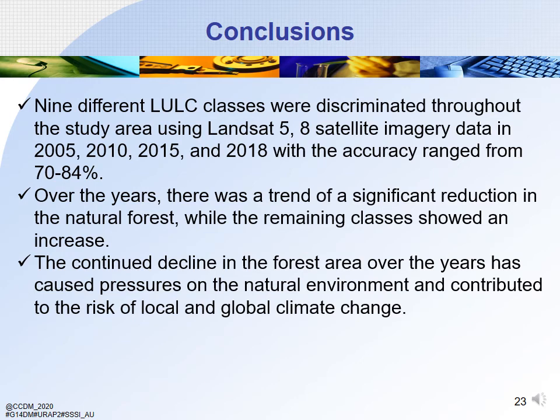In conclusion, nine different LULC classes were discriminated throughout the study area using Landsat 5, 8, and CELA imagery data across four years — 2005, 2010, 2015, and 2018 — with accuracy ranging from 70% to 84%. Over the years, there was a trend of significant reduction in natural forest while the remaining classes showed an increase. The continued decline in forest area over the years has caused pressure on the natural environment and contributed to the risk of local as well as global climate change.